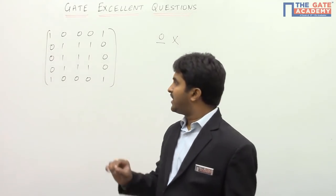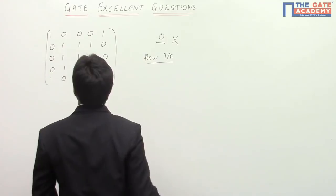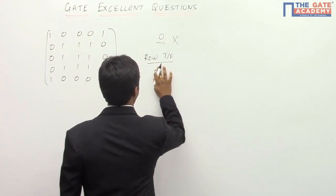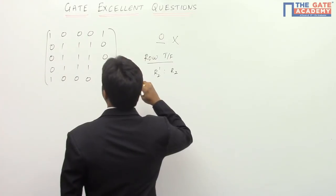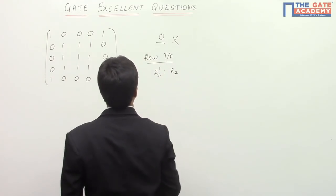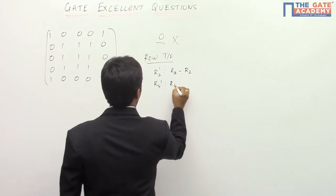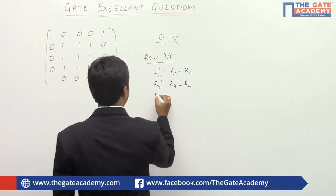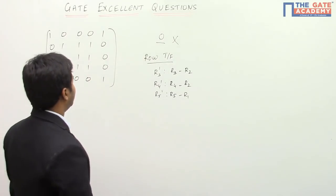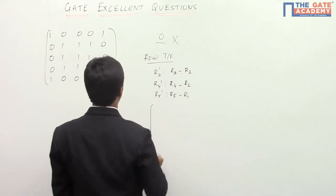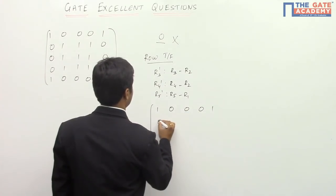Mistake number two is that students apply row transformation. The row transformations applied are: R3' = R3 − R2, R4' = R4 − R2, and R5' accordingly. After the transformation, the result has the first two rows unchanged and the remaining rows become zero rows.